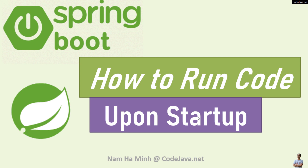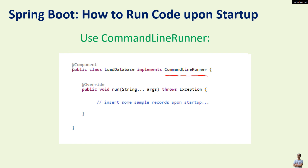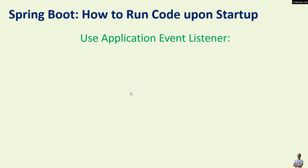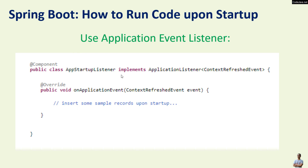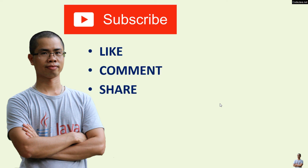So now you've learned how to run code upon startup of a Spring Boot application. To summarize: you can use CommandLineRunner as a bean in a configuration class, or implement the CommandLineRunner interface in a @Component class and override the run method. Alternatively, you can use ApplicationListener for the ContextRefreshedEvent and override the onApplicationEvent method, or use the @EventListener annotation in a component class specifying the parameter type as ContextRefreshedEvent. I hope you found this video helpful — please subscribe, like, comment, and share. Thanks for watching!